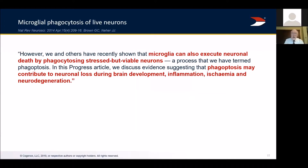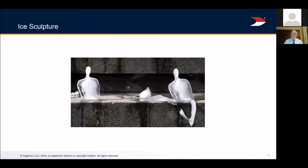But from the same paper: microglia can also execute neuronal death by phagocytizing stressed but viable neurons. Under what circumstances would neurons be stressed but viable? For example, in an inflammatory context where inflammation interferes with ATP production in neurons and therefore their ability to signal robustly. In an encephalitic brain, neurons are marginally functioning because of inflammation, and the risk is that you will lose those neurons to excessively exuberant phagocytosis — instead of sculpture, you'll get ice sculpture. We absolutely have to push back against that.